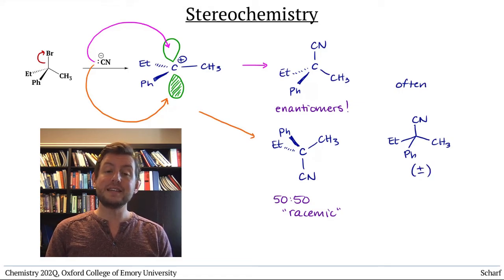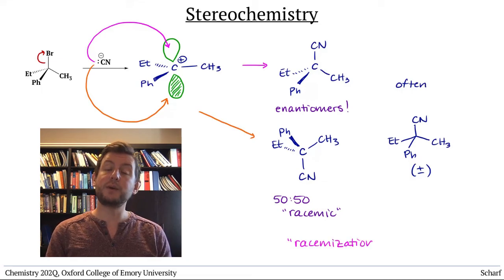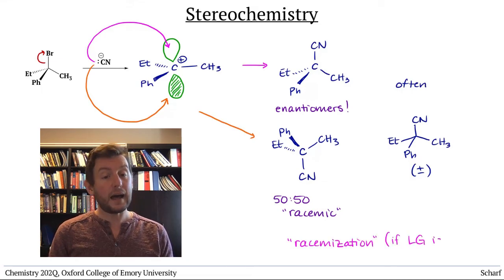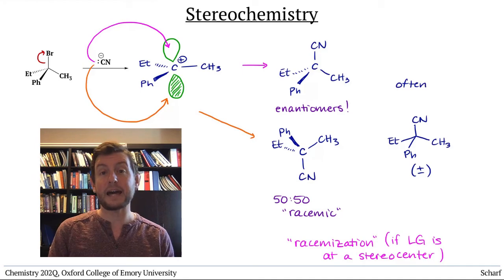The SN1 reaction is said to proceed with racemization of stereochemistry at the reactive carbon. As with the SN2 reaction, this stereochemical outcome is only relevant if the leaving group is at a stereocenter.